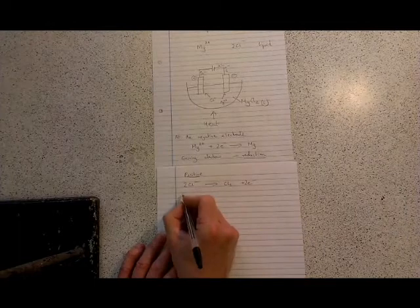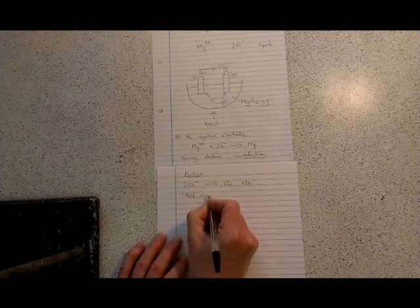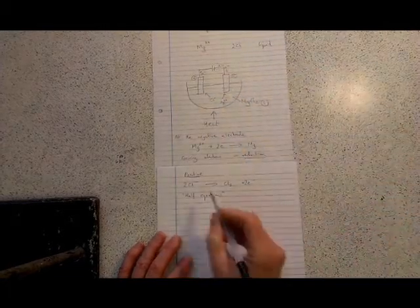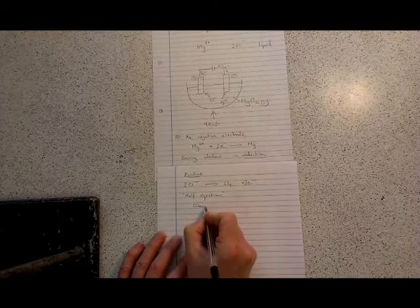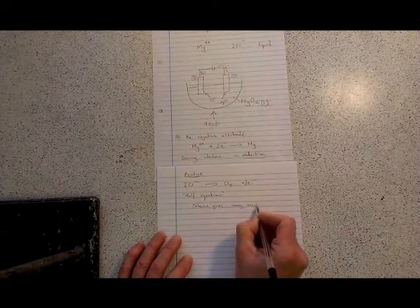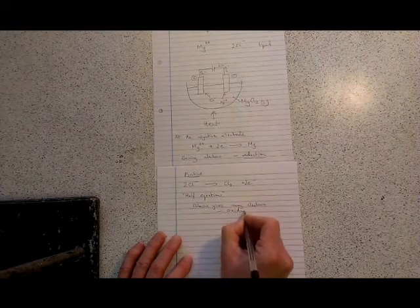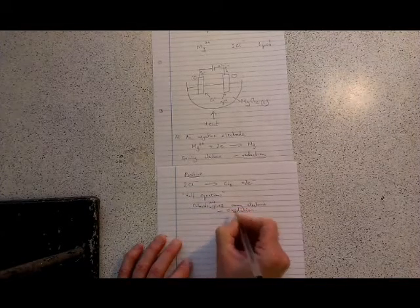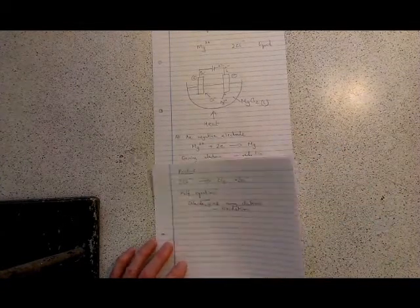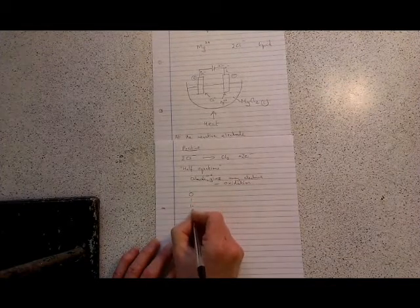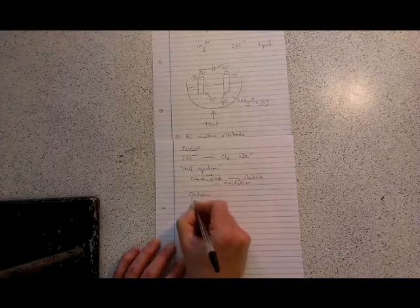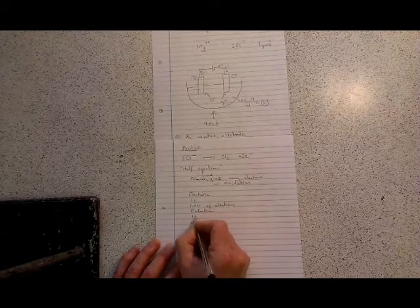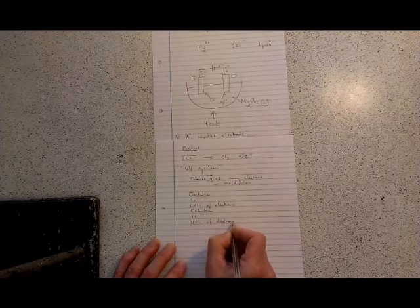This equation that includes electrons is called a half equation. And half equations are called that because they only show what's happening in half the reaction. They show what's happening at one of the two electrodes. Now, chlorine is giving away electrons. And that we define as, or it's another way of defining, oxidation. So chloride ions give away electrons. That is oxidation. And a way of remembering what's oxidation and what's reduction? There's a, what we call a mnemonic, to remember it. Oil rig, oxidation is loss of electrons. Reduction is gain of electrons. You've got to remember oil rig is loss, gain of electrons.